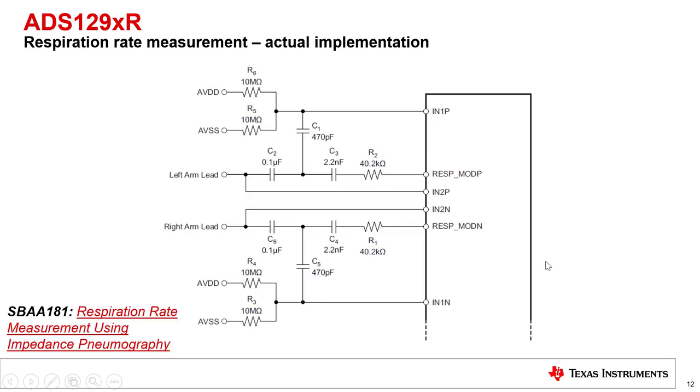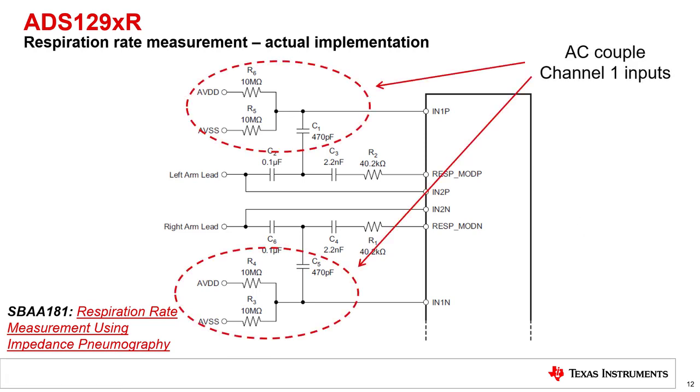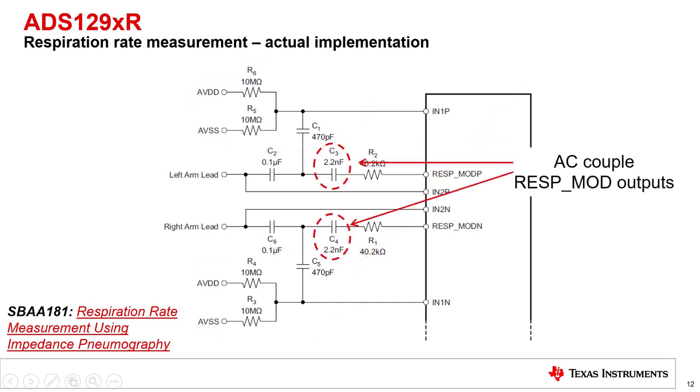The ADS129XR actually implements this using several passive components. Capacitors C1 and C5 in this diagram are used to AC-couple the electrode inputs. Resistors R3, R4, R5, and R6 form resistor dividers on each input to bias them back to mid-supply. C3 and C4 are used to AC-couple the respiration modulation signal on the RESP-MODP and the RESP-MODN pins. Series resistors are also used to limit the AC current.